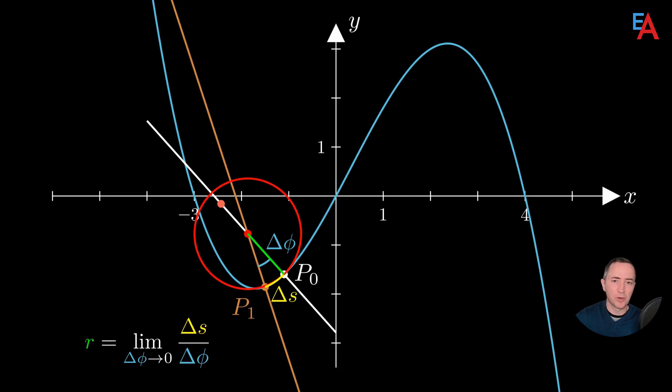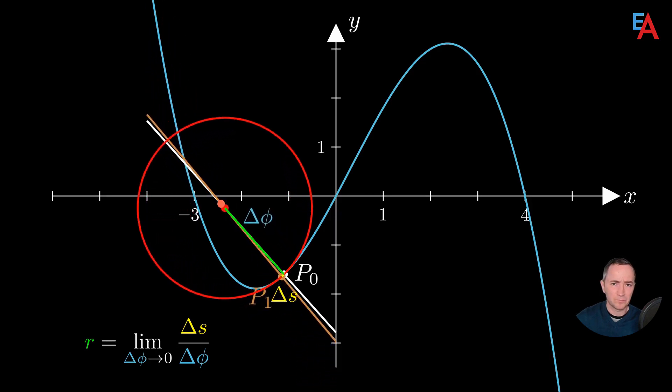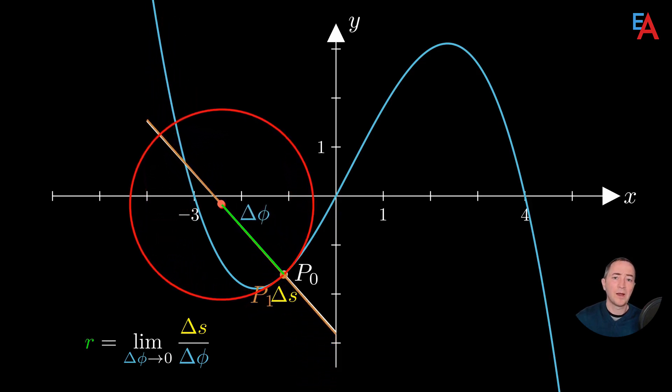When the delta phi angle approaches zero, the radius lengthens. And reaches the limiting radius, which is defined as the radius of curvature we wanted. From this recipe, detailed formulas can be derived for the radius of curvature of the function f of x or for a parametric curve.